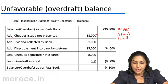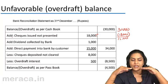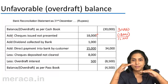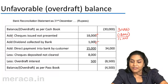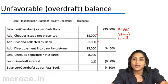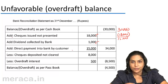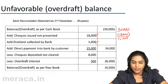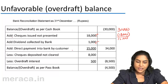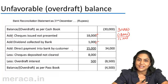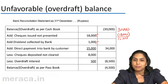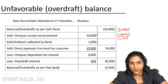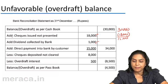Let's take another example: dividend collected by the bank, 1,000. For an ordinary favorable balance, the passbook balance would have gone up. Starting from the cash book to reach the passbook, we add the dividend collected by the bank — 1,000. But in effect, we have minus 30,000 plus 1,000, giving minus 29,000. The overdraft has come down. Therefore, when preparing a bank reconciliation statement, we can stick to the same logic for a favorable balance, provided we precede the overdraft with a minus sign.